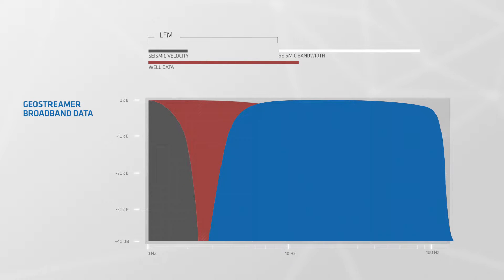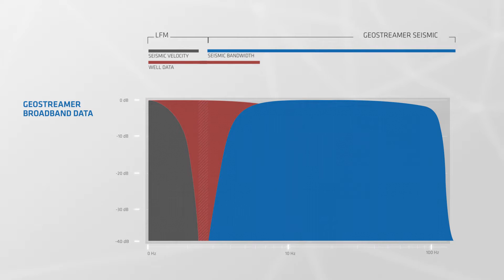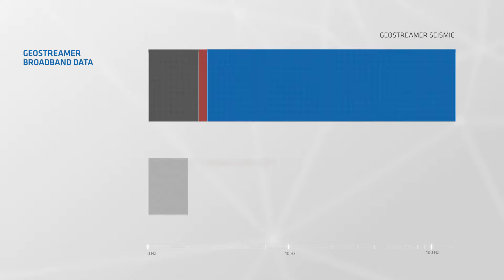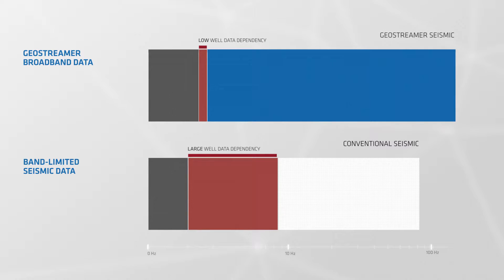Geostreamer data with much greater low-frequency content substantially reduces the potential bias introduced by using well information. Geostreamer data makes the computation of rock properties less dependent on what we already believe and increases the accuracy in areas where well information may be scarce or uncertain.